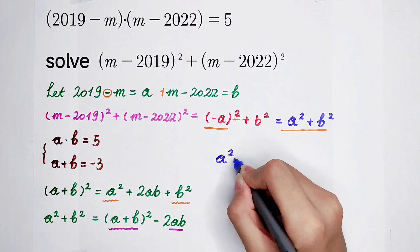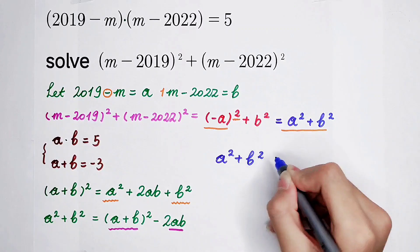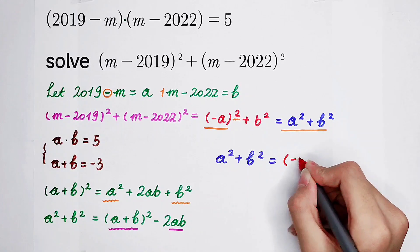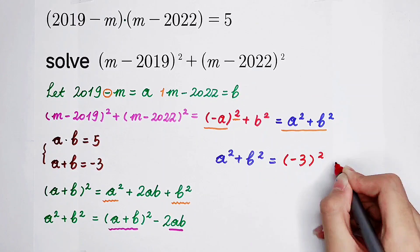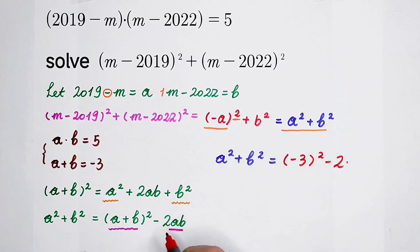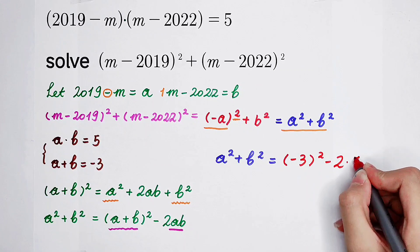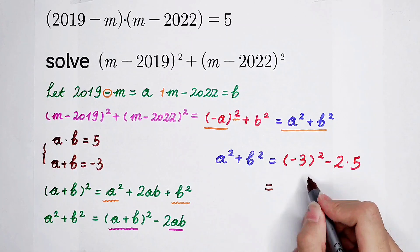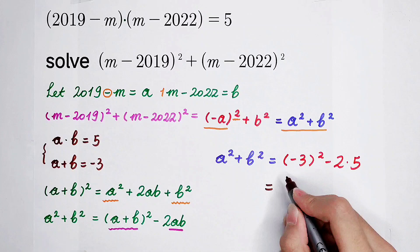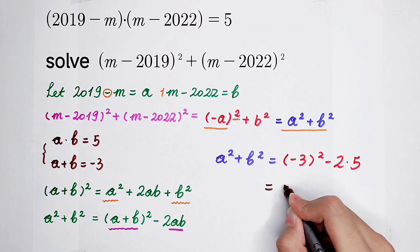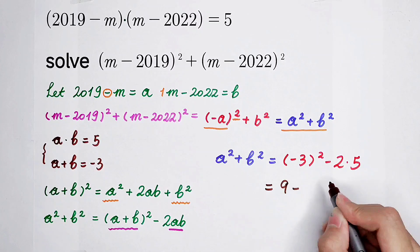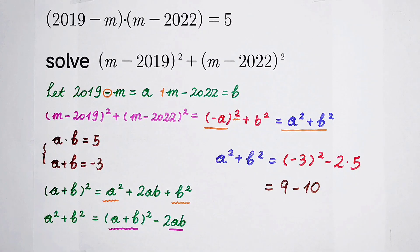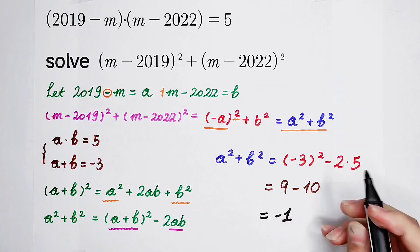So a squared plus b squared equals (a plus b) squared minus 2 times ab. Substituting: a plus b is negative 3, so (negative 3) squared equals 9. And 2 times ab equals 2 times 5 equals 10. Therefore the final answer is 9 minus 10, which equals negative 1.